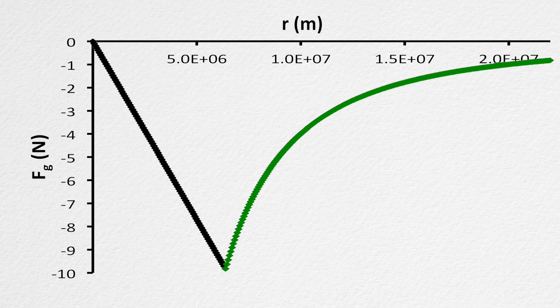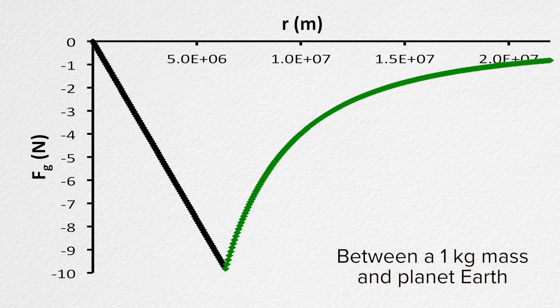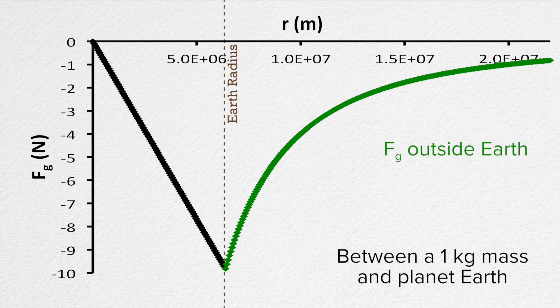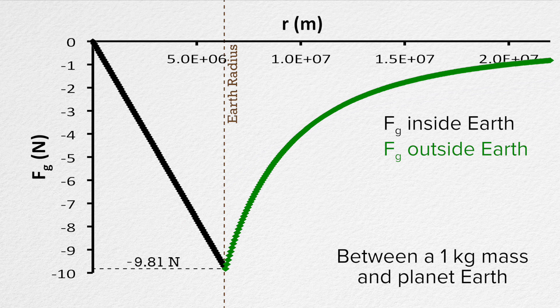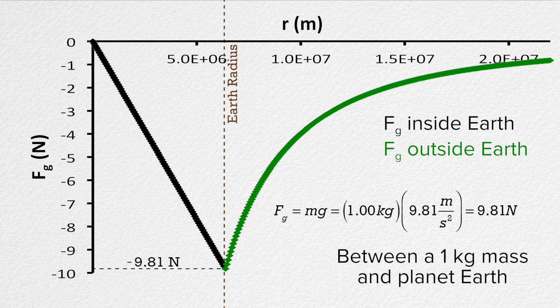This is a graph of the force of gravitational attraction between a 1 kilogram object and the Earth, using real values for Earth's mass and radius. In green is the force of gravity when the object is outside the Earth. In black is the force of gravity when it is inside the tunnel through the planet. The value of the force of gravity at the surface of the Earth has a magnitude of 9.81 Newtons — as expected, since 1 kg times 9.81 m/s² equals 9.81 Newtons.